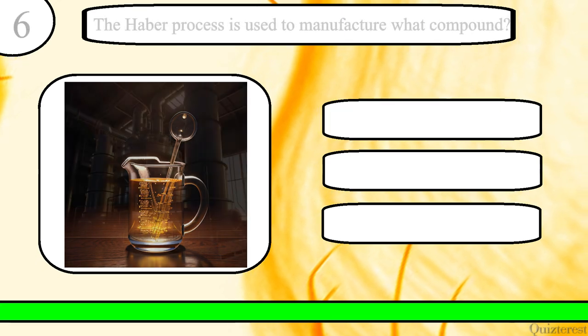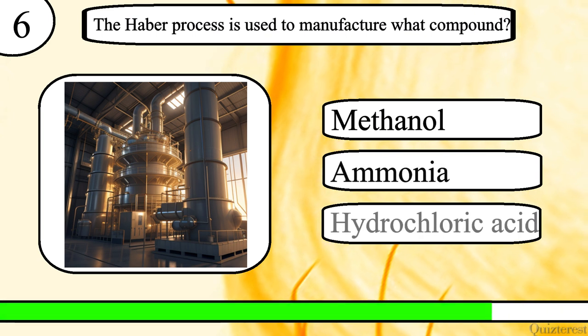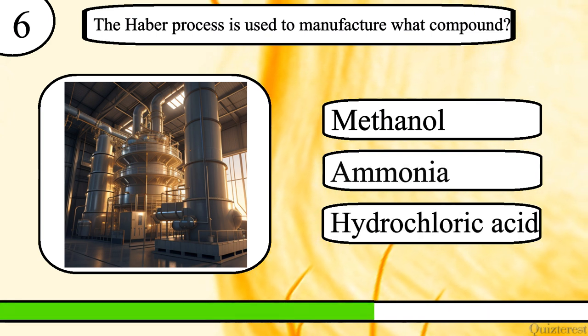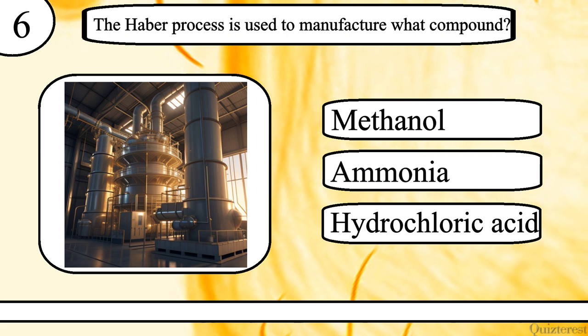Question 6. The Haber process is used to manufacture what compound? Methanol, ammonia, or hydrochloric acid? The correct answer is ammonia.